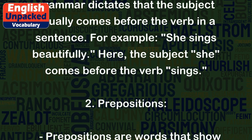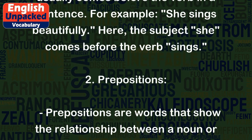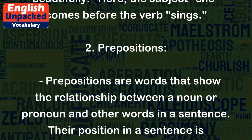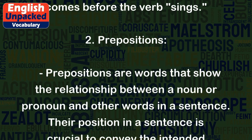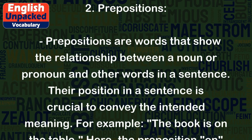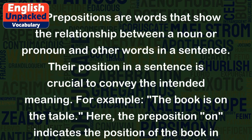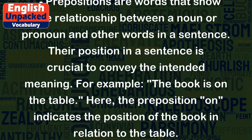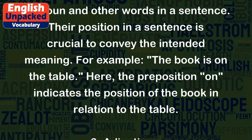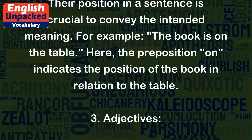2. Prepositions. Prepositions are words that show the relationship between a noun or pronoun and other words in a sentence. Their position in a sentence is crucial to convey the intended meaning. For example, the book is on the table. Here, the preposition on indicates the position of the book in relation to the table.